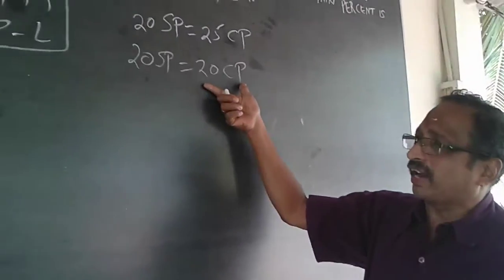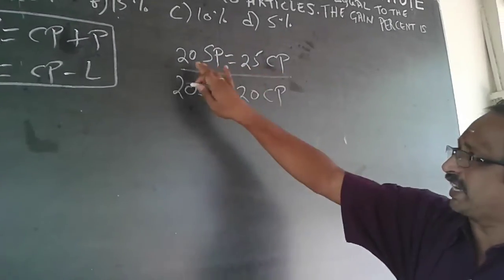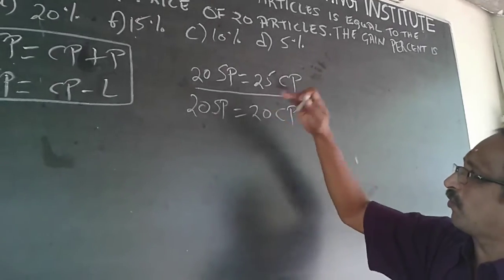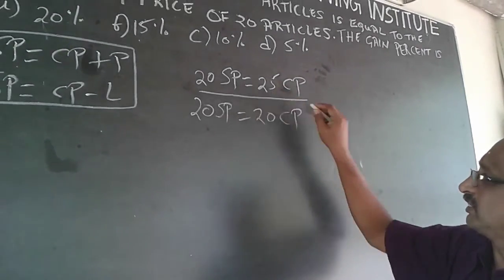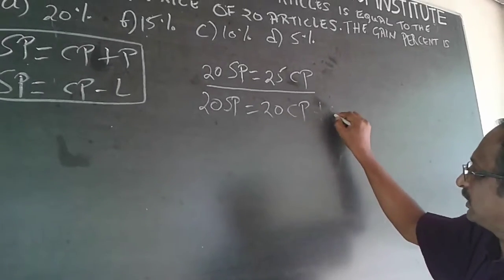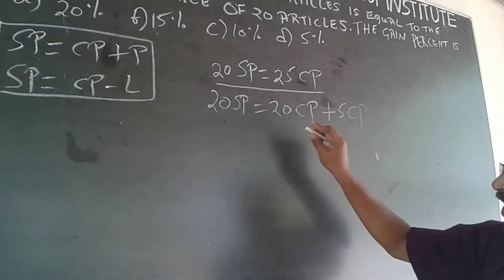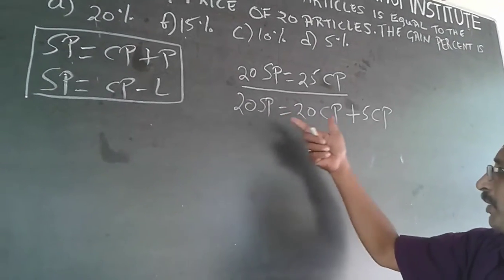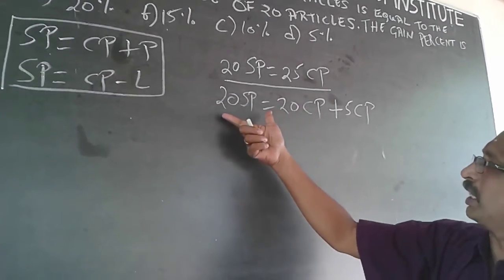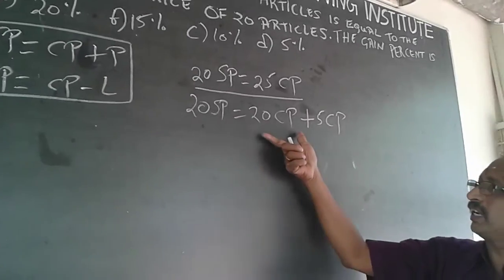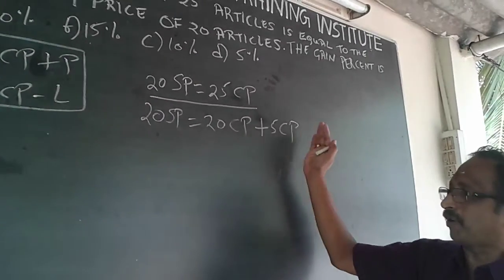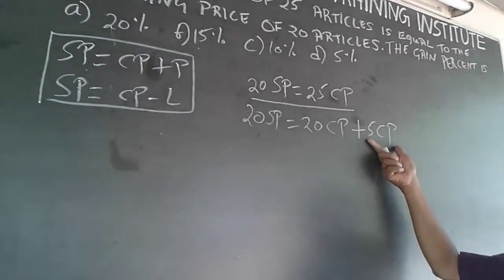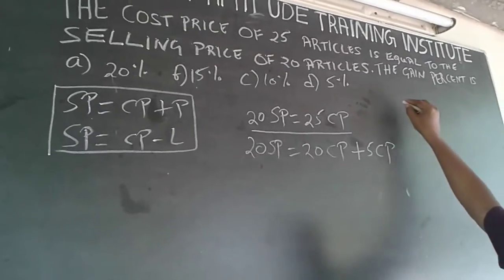This is the right equation. To work with it properly, I rewrite it as: 20 SP = 20 CP + 5 CP. According to the formula, selling price equals cost price plus profit — so 20 SP equals 20 CP (the cost price of 20 articles) plus 5 CP, which is the extra amount. Therefore, I am making a profit of 5 CP.